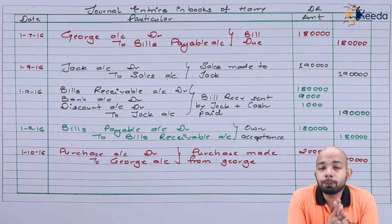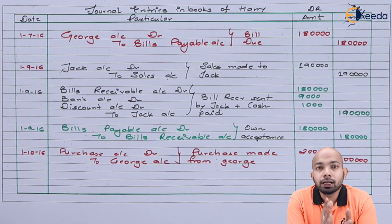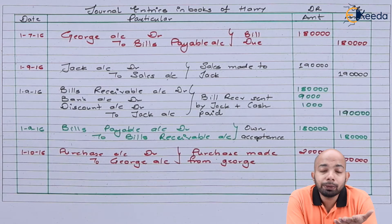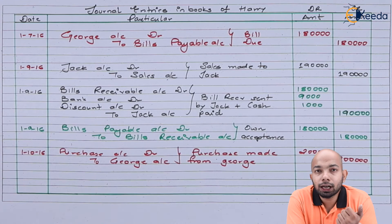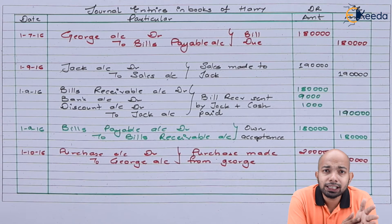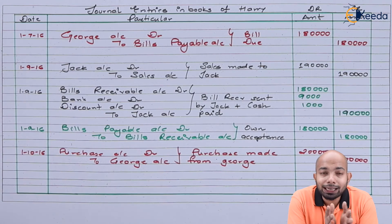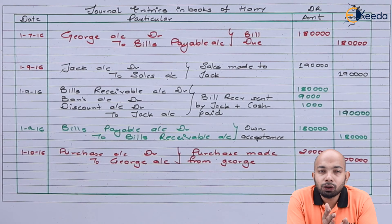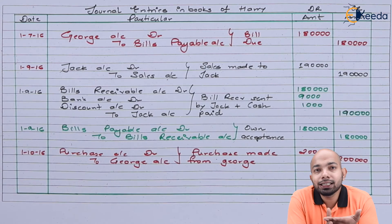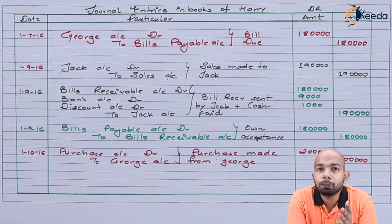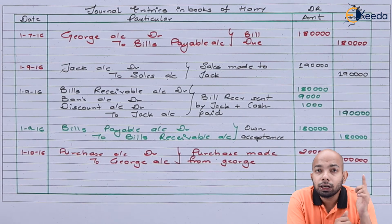The next entry is the purchase Harry made from George worth 2 lakh: Purchase Account debit, George Account credit — George being a personal account, credit the giver. The balance to be paid is only 20,000, because 1 lakh 80,000 was already settled via the mutual acceptance bill, and goods were worth 2 lakh. So George Account is debited and Bank Account credited for 20,000.